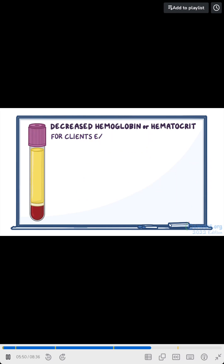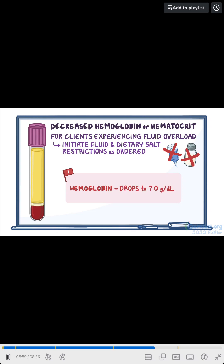For clients experiencing fluid overload, initiate fluid and dietary salt restrictions as ordered. If at any point your client's hemoglobin drops to 7.0 grams per deciliter, or if the hematocrit drops to 21%, immediately report this information to the healthcare provider, as these are considered critical levels.